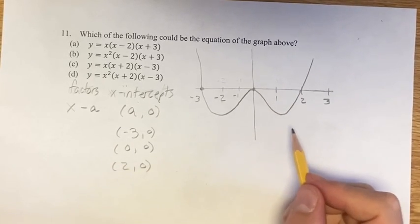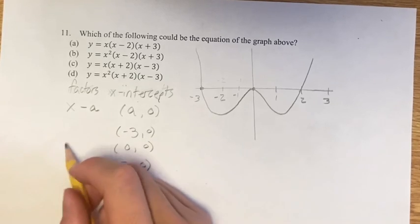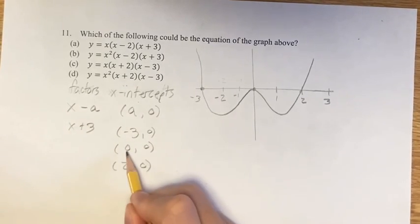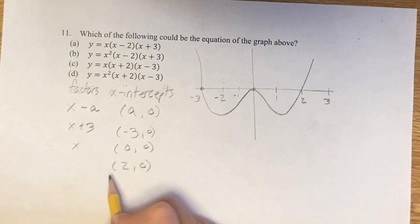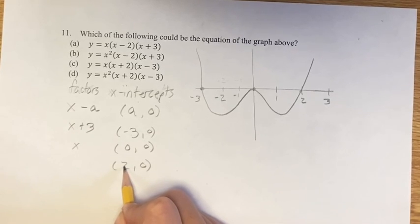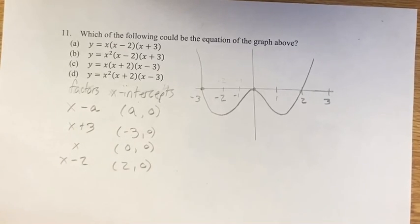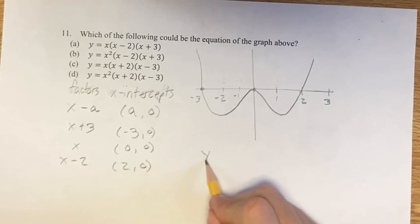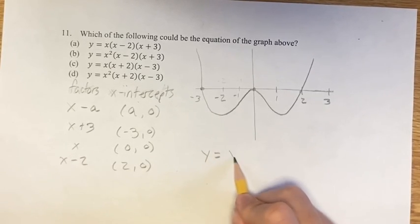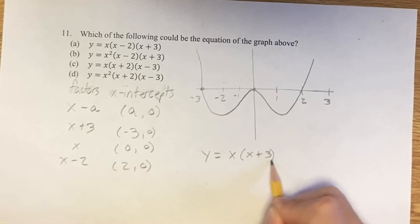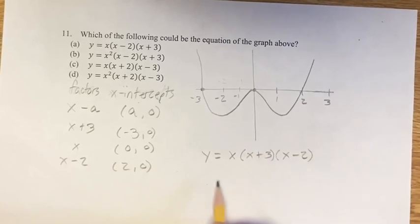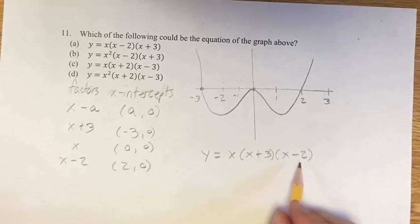So therefore, the factors are going to be x minus negative 3, so x plus 3, x minus 0, which is just x, and x minus 2, which is x minus 2. And now we have y is equal to x times x plus 3 times x minus 2. And you multiply all these together, and you get your function.